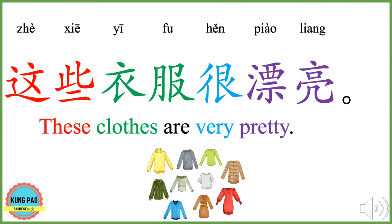这些衣服很漂亮。 这些 means these. 衣服 means clothes. 很 means very. 漂亮 means pretty or beautiful. 这些衣服很漂亮 means these clothes are very pretty. Now you could try.